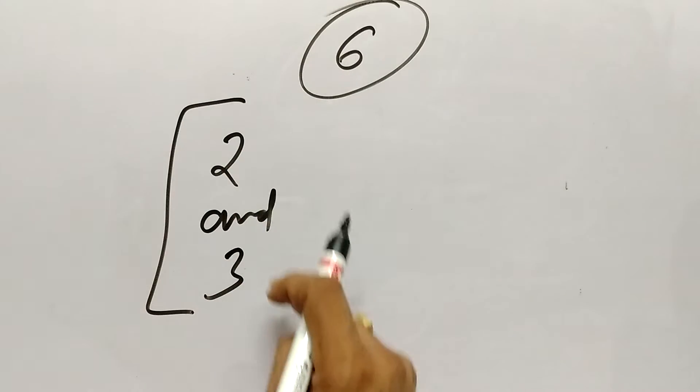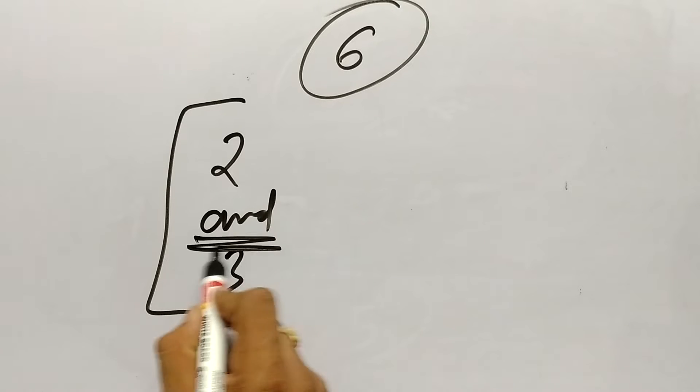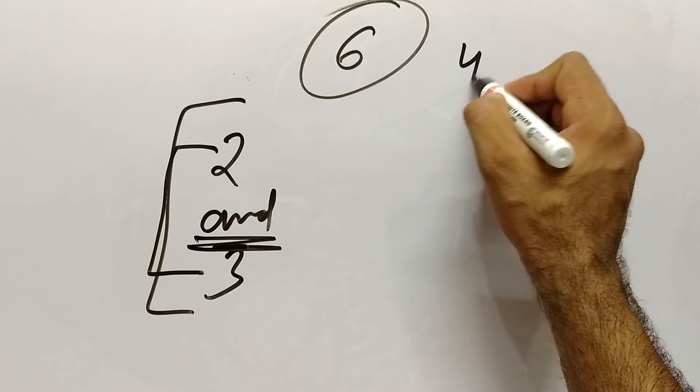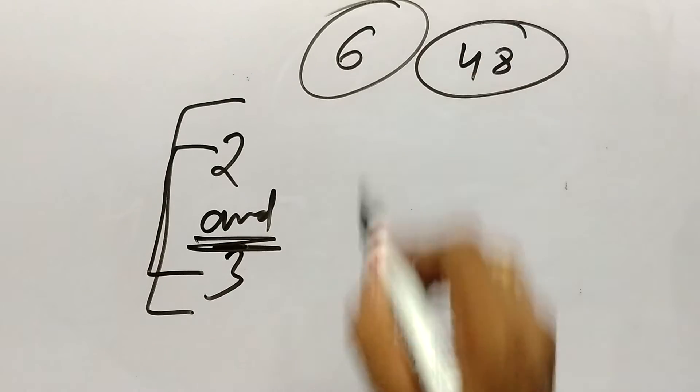What I have written 2 and 3, and 'and' matlab dono condition agar koi bhi number ka mil jata hai, so we can say that this number is exactly divisible by 6. For example the number is 48.